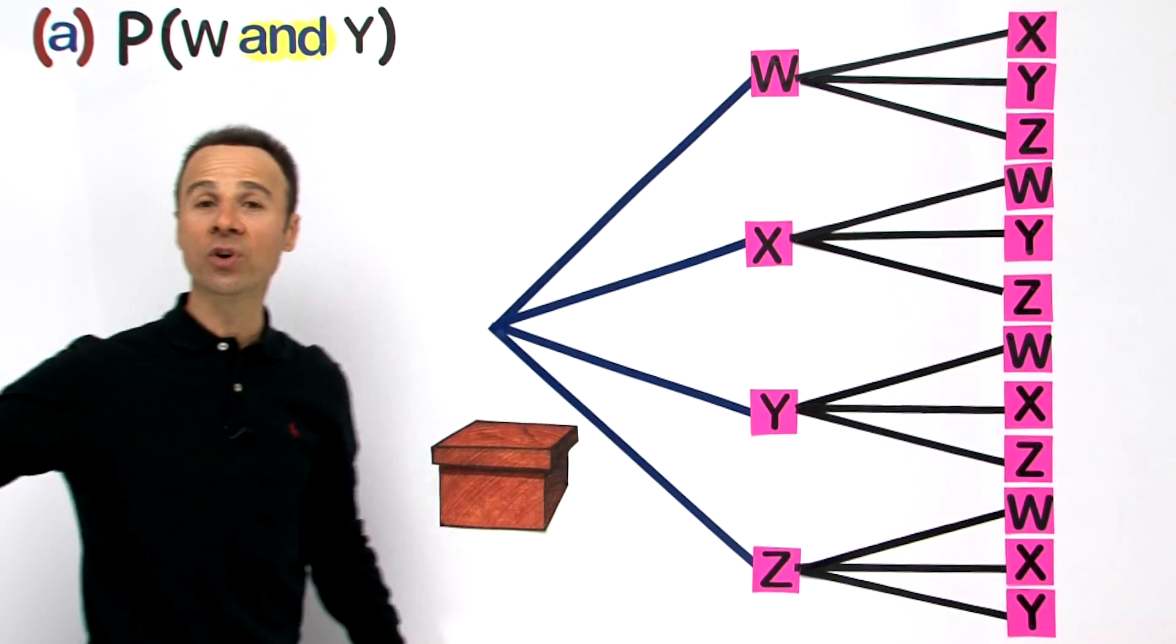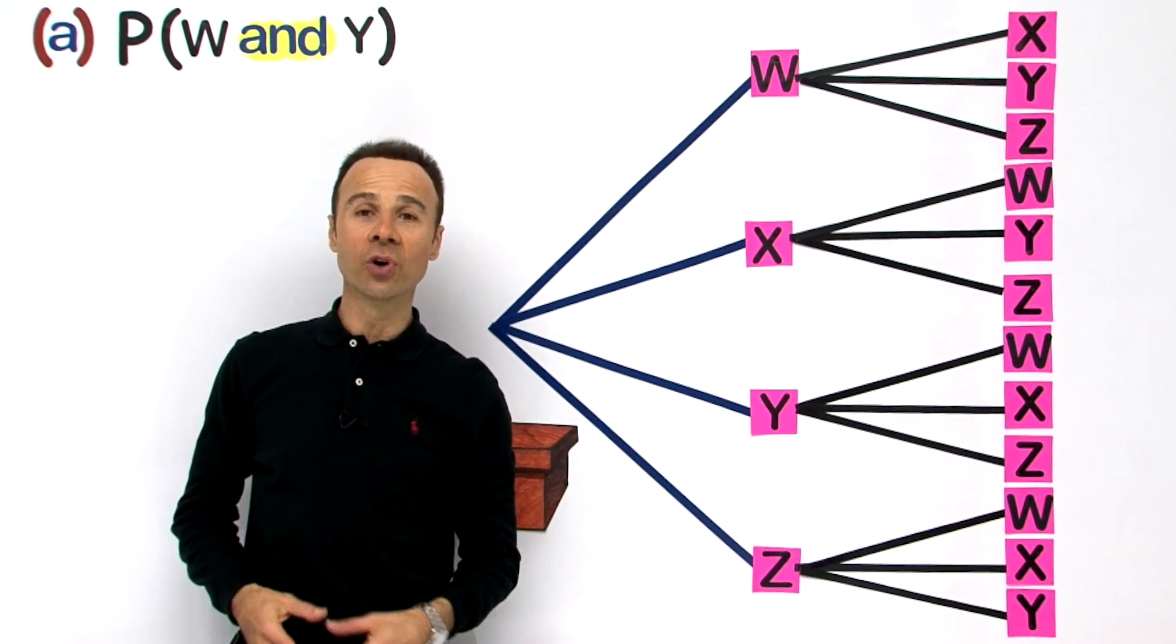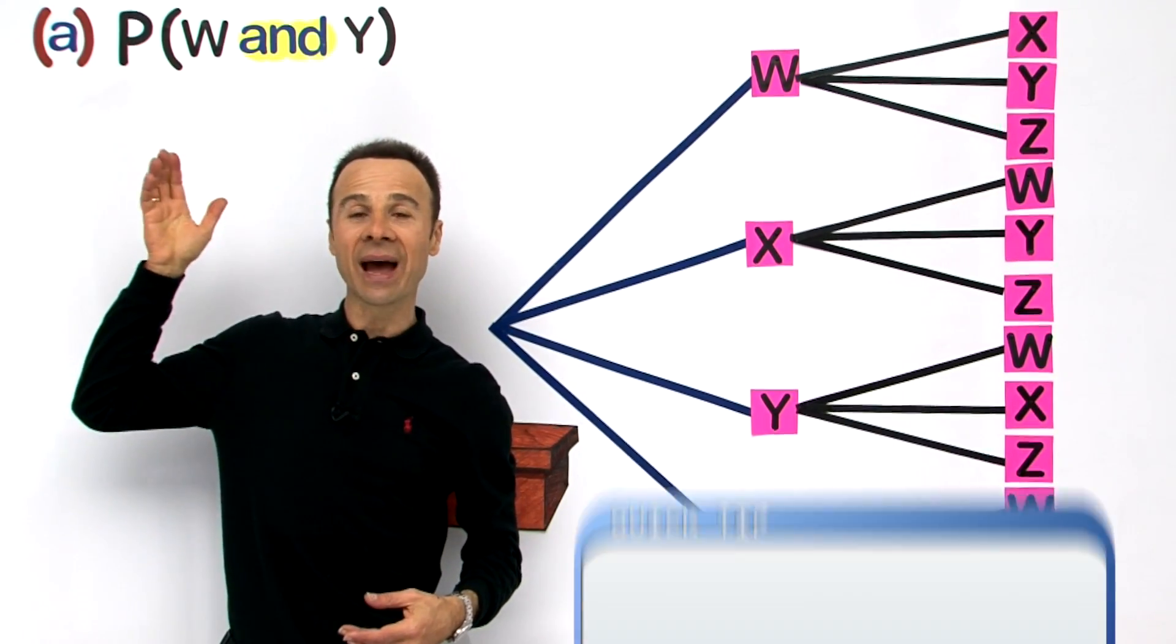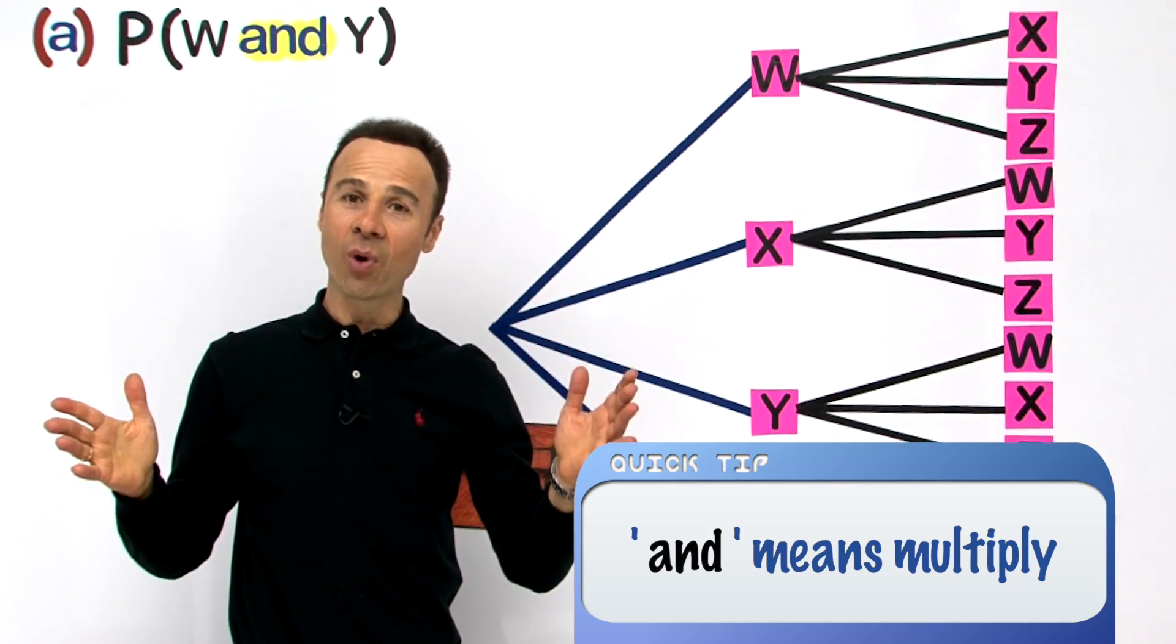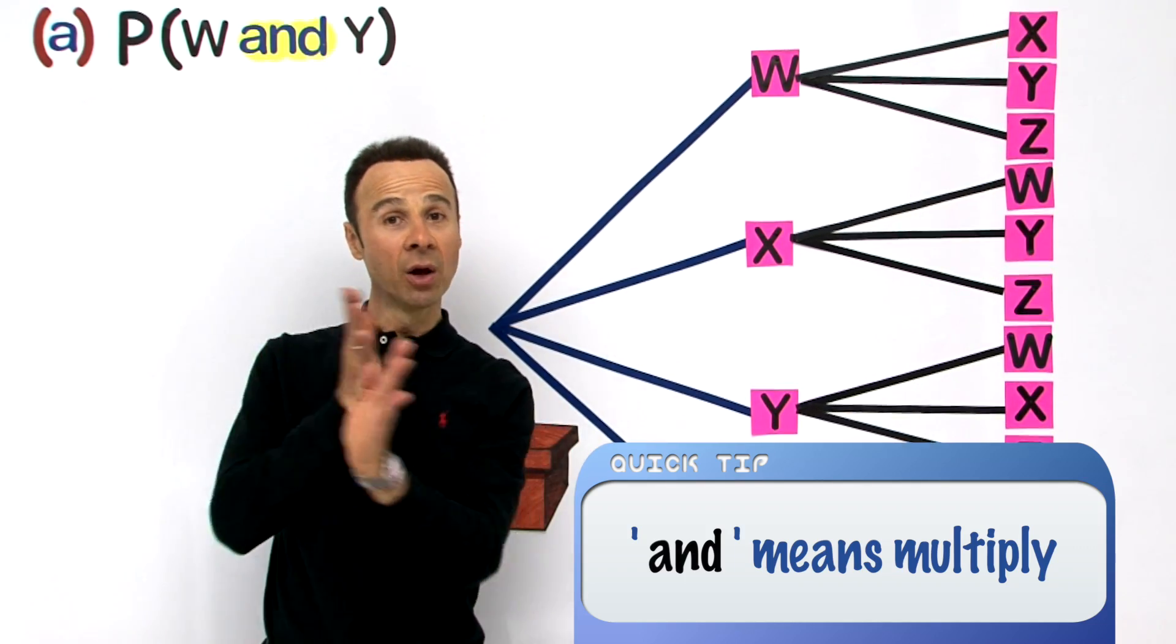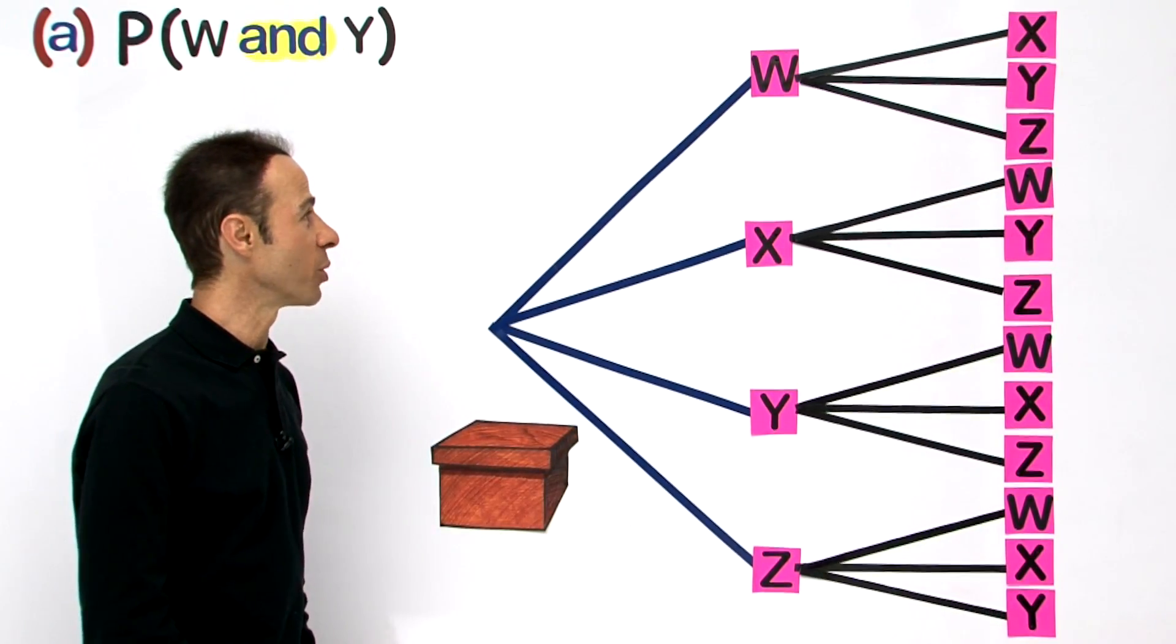So let us look at the criteria of the question. The criteria asks we are looking for a W and a Y. Now that does not necessarily mean W then Y—could mean in any order. It could be a Y or a W. So we are going to look up on here and see what possibilities we can come up with.